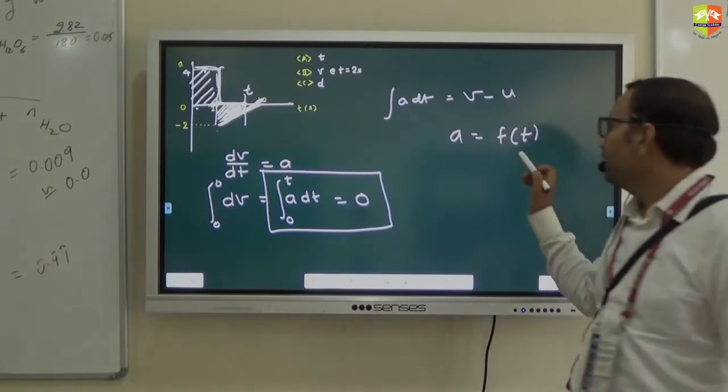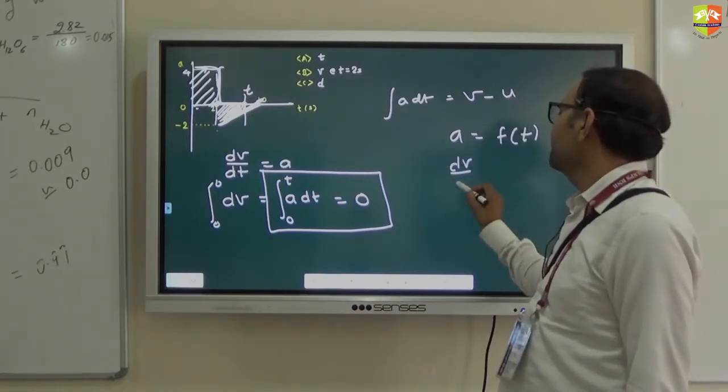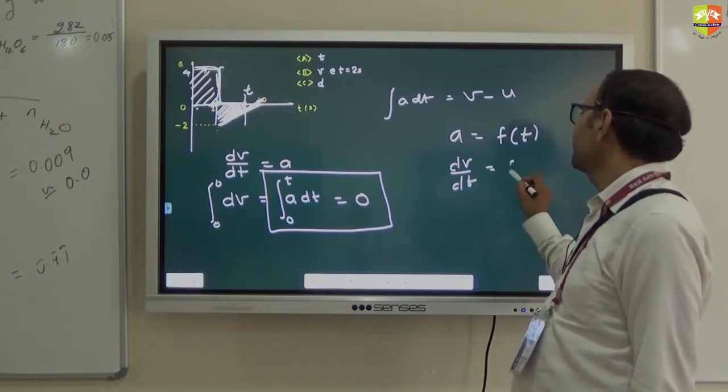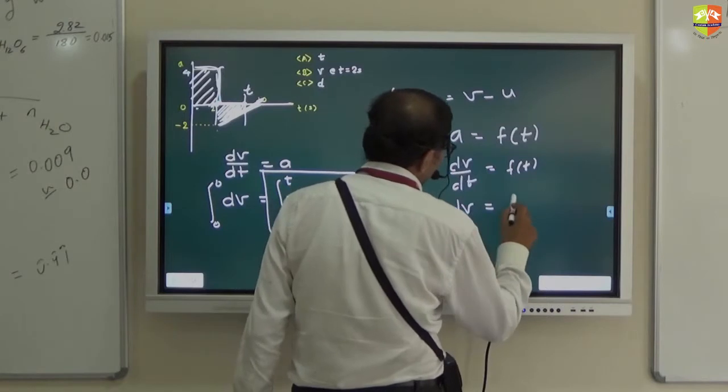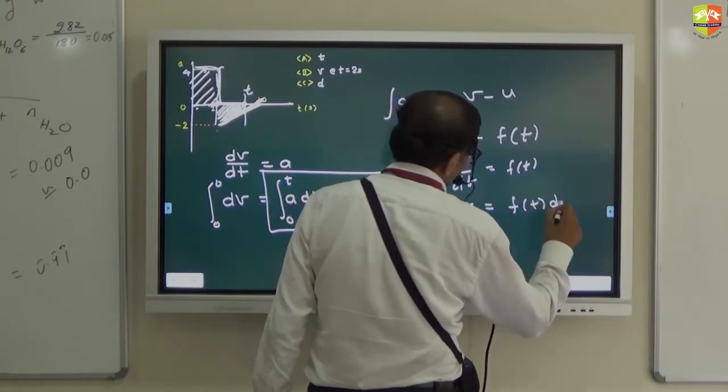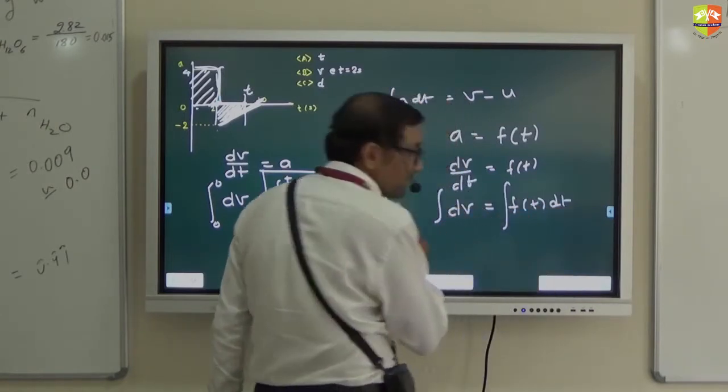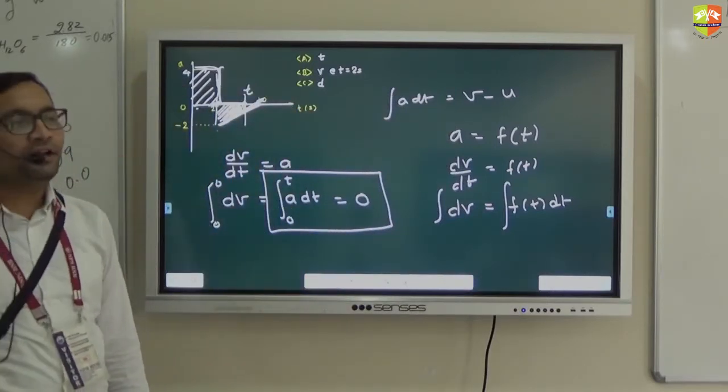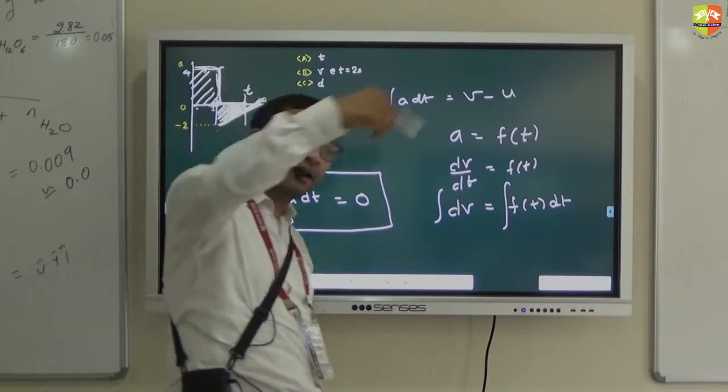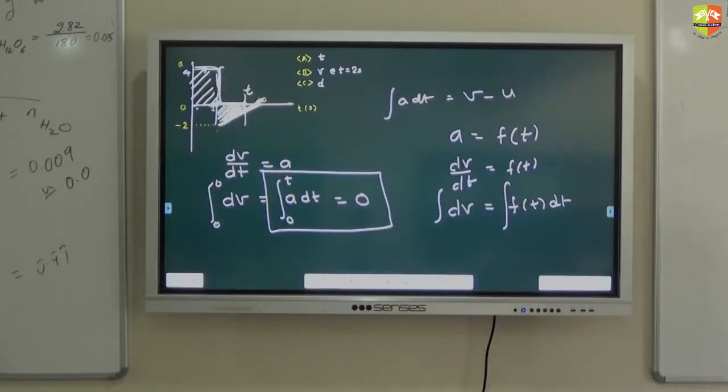That will be equal to, let's say F function of T. A is dV by dt. You integrate dV. You integrate this and then once you get V then you write V as dx by dt. And then again integrate. Double integrate. Get V and then get x. Okay.